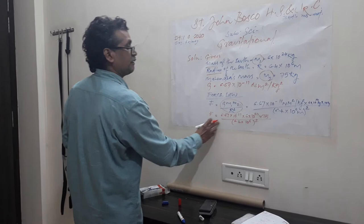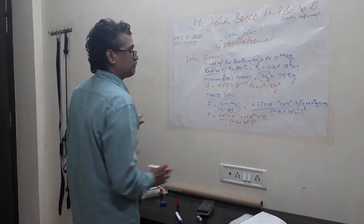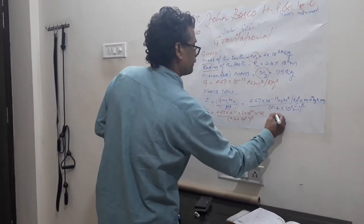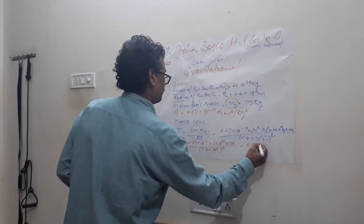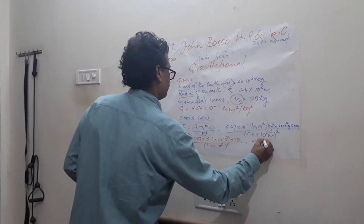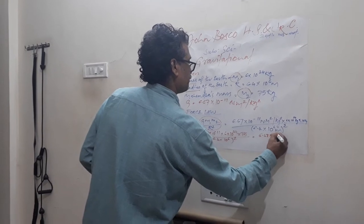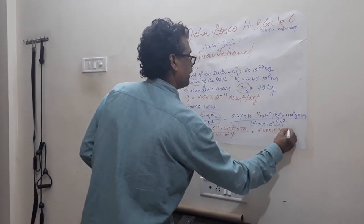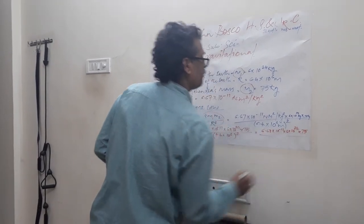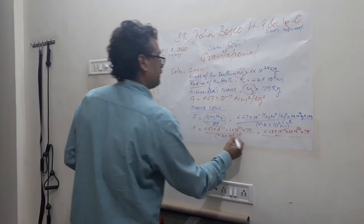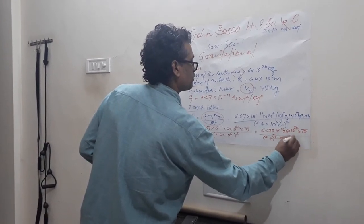At this step, don't include the units — Newton meter square per kg square — just take the numbers and do the calculation. So: 6.67 into 10 raised to minus 11, multiplied by 6 into 10 raised to 24, into 75. I will split it so the answer comes in an easy way. The denominator is 6.4 squared, into 10 raised to 6, the whole square.